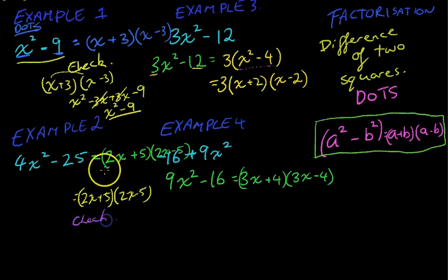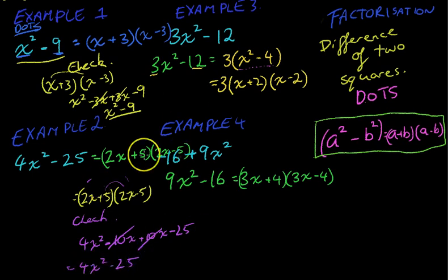2X times 2X makes 4X squared. First. Outer. 2X times 5 makes 10X. Inner. 5 times 2X makes 10X. That first one should be negative. And the last one, negative 25. Those cancel each other out. And we end up with 4X squared minus 25. So, you can check all of your work as you go with these difference of two squares questions.